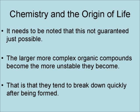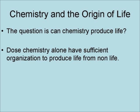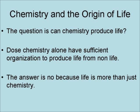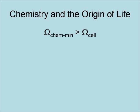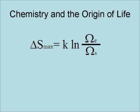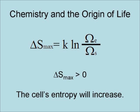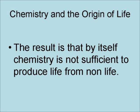The question is: can chemistry produce life? Does chemistry have sufficient organization to produce life from non-life? The answer is no, because life is more than just chemistry. The assemblage of living cells is a complex assembly of information and molecular machines that manufactures, transports, and manipulates large complex molecules as needed. Mathematically, this becomes omega-chem-min is greater than omega-cell, such that Ω_E equals omega-chem-min and Ω_S equals omega-cell. Applying the formula, delta S max is greater than zero — so the cell's entropy will increase based only on chemistry. By itself, chemistry is not sufficient to produce life from non-life.